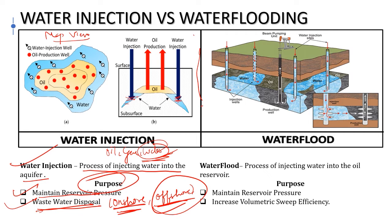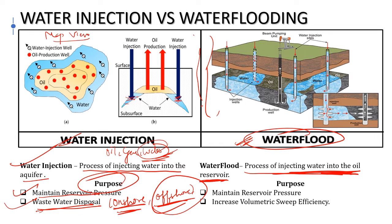Water flooding is the process of injecting water into the oil reservoir — not into the aquifer as in water injection, but directly into the reservoir. The injector wells inject water into the oil reservoir, and as a result the water sweeps oil toward the producer well. The main purposes of water flooding are to maintain reservoir pressure and to increase the volumetric sweep efficiency.